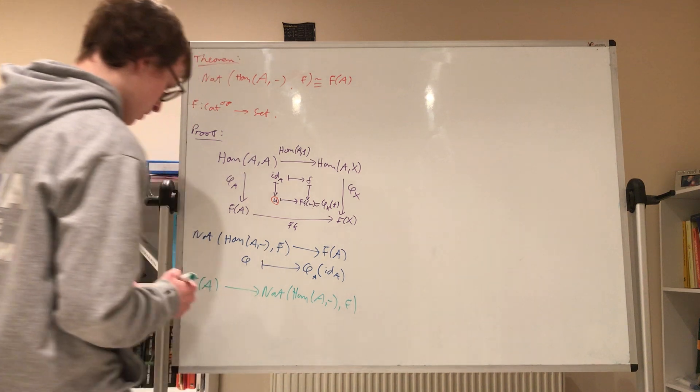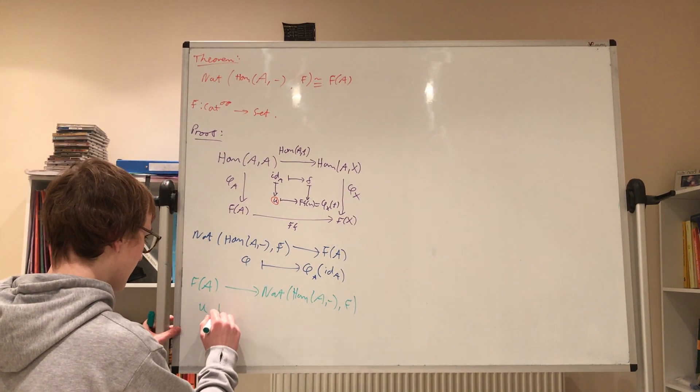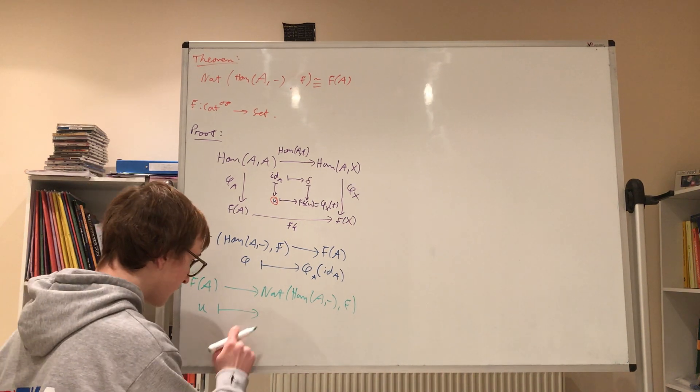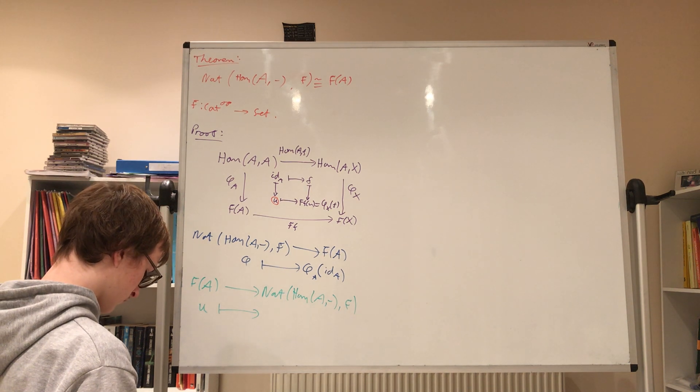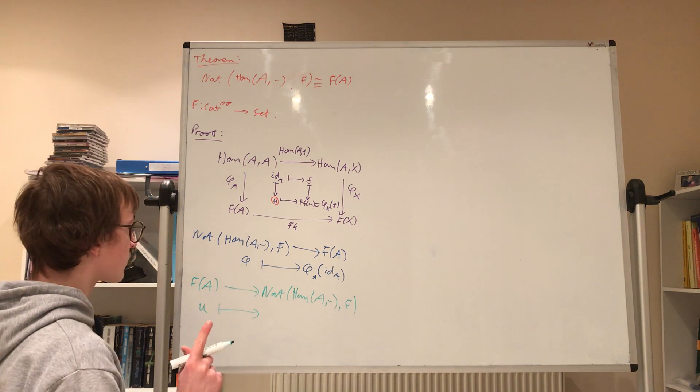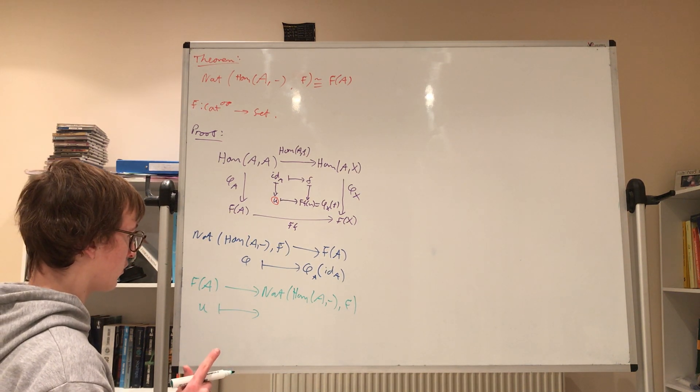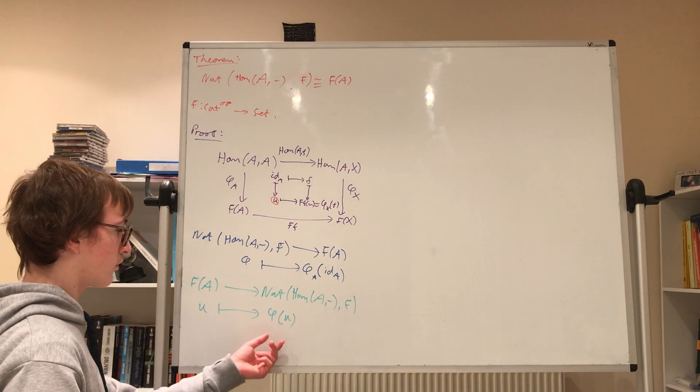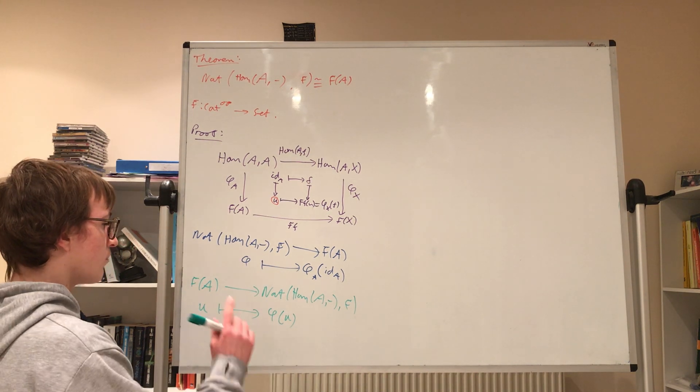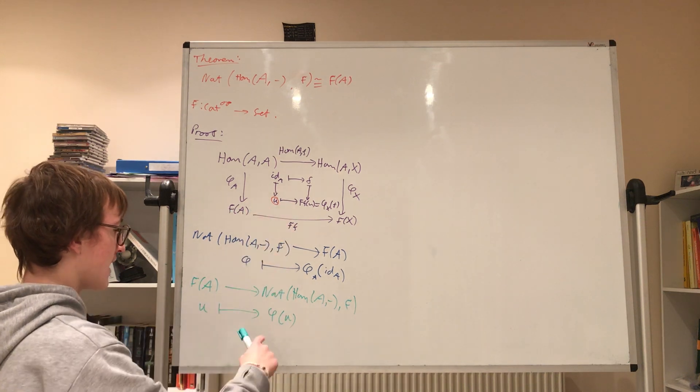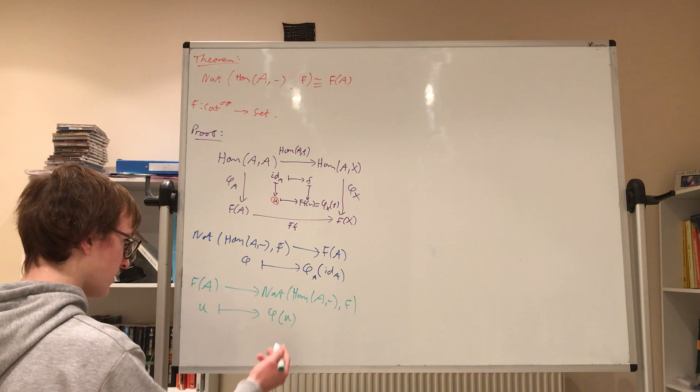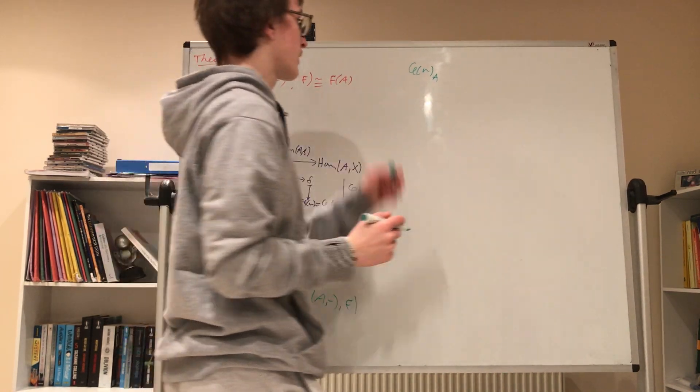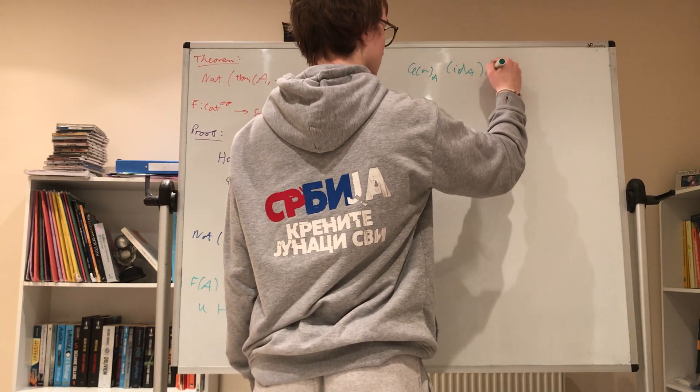Now, what's the inverse map? Well, it's going to take some element U, and it's going to map it to the unique natural transformation phi_U, and this unique natural transformation phi_U, well, what is it? It's the one that is determined by the property that phi_A, so phi of U has the property that phi_U at A, so this is just a natural transformation of the identity at A is equal to U.